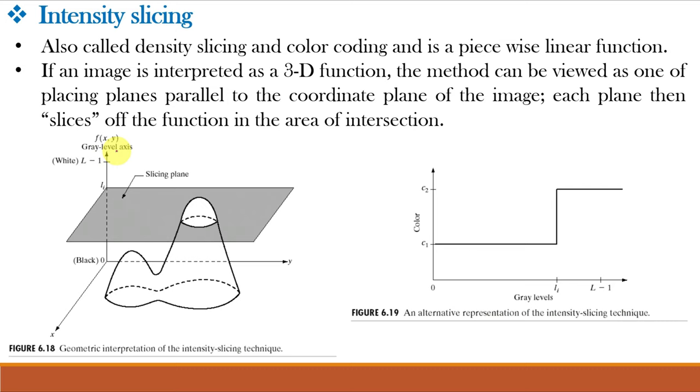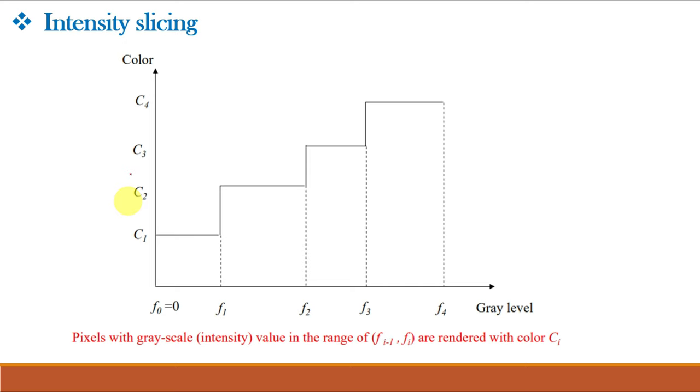Levels that lie on the plane itself may be arbitrarily assigned one of the two colors. The result is a two-color image whose relative appearance can be controlled by moving the slicing plane up and down the gray level axis. For this figure, two colors C1 and C2 are assigned. C1 below the slicing plane and C2 above the slicing plane. While here, four colors are assigned. The gray level to color assignments are made according to the relation: f of xy is equal to CK if f of xy belongs to VK. Here, CK is the color associated with the kth intensity interval. The more the slicing planes, the more the colors.